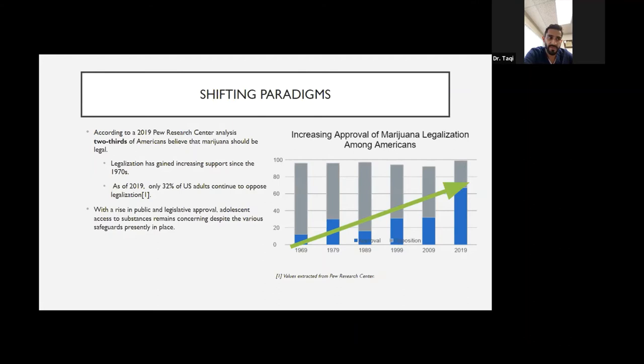According to the 2019 research center analysis, about two-thirds of the Americans believe that marijuana should be legalized. Legalization, as we know, started in the 70s. As of 2019, about 32 percent of U.S. adults continue to oppose the legalization. In California, 2016, the legislation was passed for above 21 years of age to legalize marijuana use. With the rise in the public and the legislative approval, the adolescents' access to substance remains concerning despite the various safeguards that are presently in place.